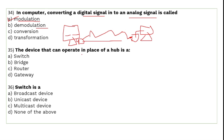The device that can operate in place of a hub is a switch. You can use a switch in place of a hub — both can be used to connect devices in a network, but there is one key difference between them.